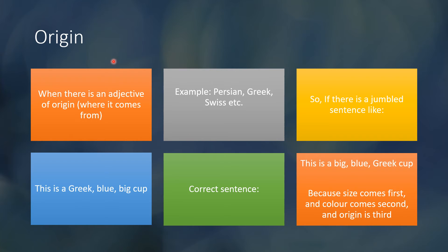The next component is origin — where something comes from. Examples include Persian, Greek, Swiss, Chinese, Japanese, Indian, etc. If there is a sentence like 'This is a Greek blue big cup,' the correct sentence will be 'This is a big blue Greek cup,' because size comes first, color comes second, and origin comes third in this particular sentence.